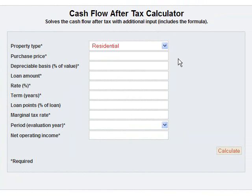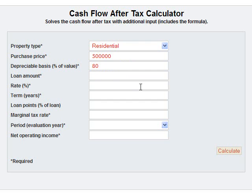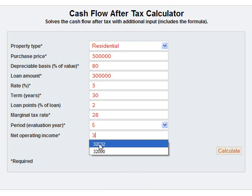It's a residential property because it's an apartment building. Purchase price is $500,000. Depreciable basis is 80%. The loan amount is $300,000. The rate is 5%, term is 30 years. Loan points are 2. Your marginal tax rate is 28%. You're evaluating for year 5, and you're projecting the net operating income to be $32,832.